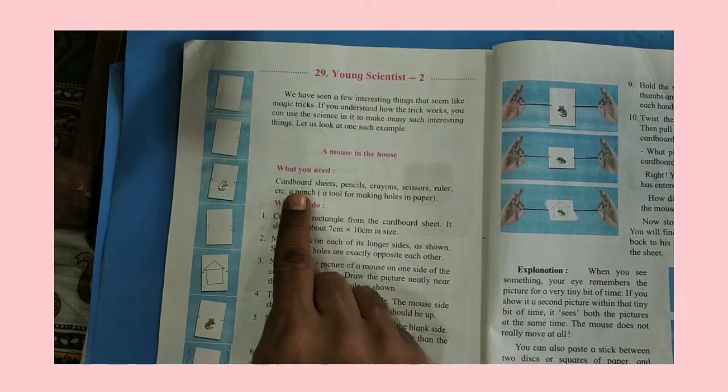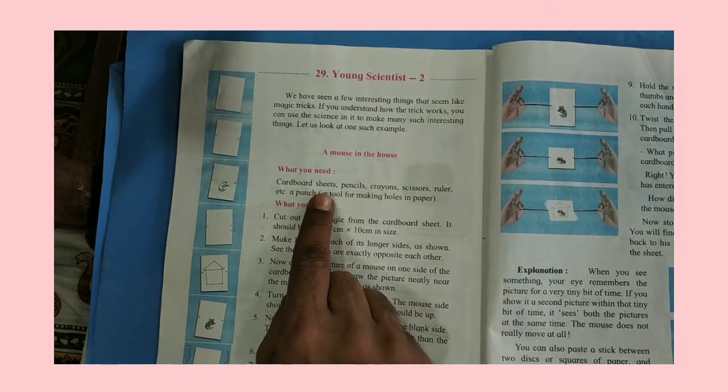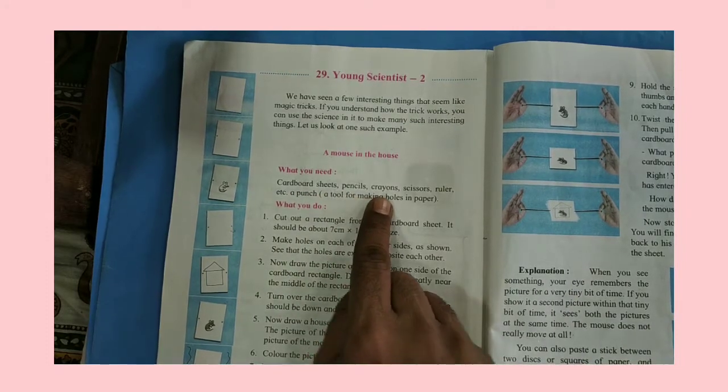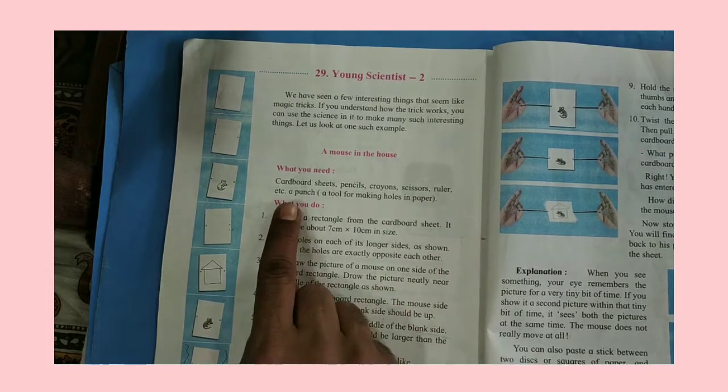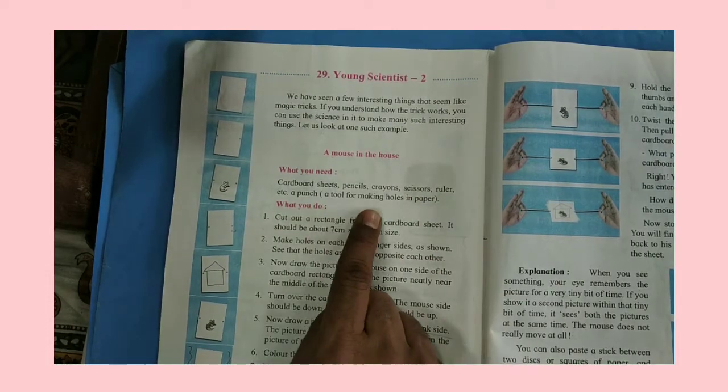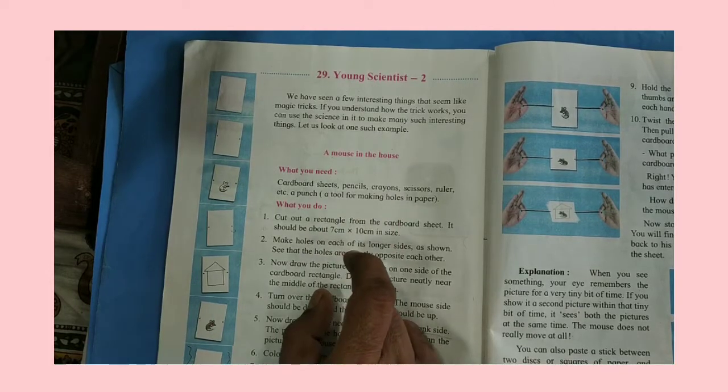For this activity you need cardboard sheets, pencils, crayons, scissors, ruler, etc. A punch, a tool for making holes in paper.